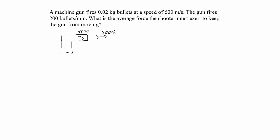And the gun is firing 200 bullets per minute. The average force is the change in momentum divided by the time interval, delta P over delta T.